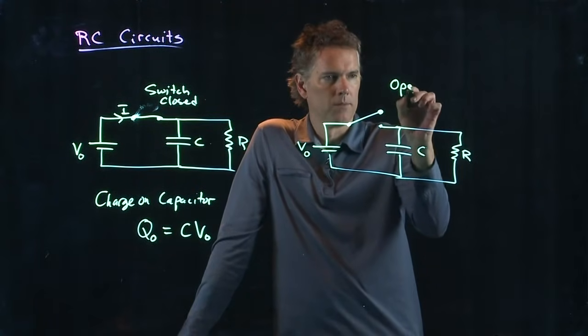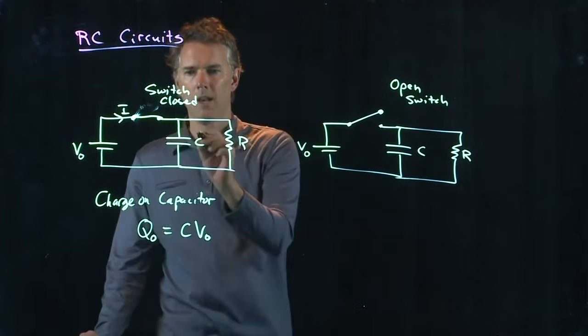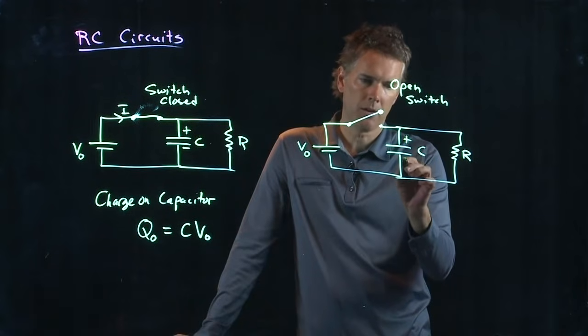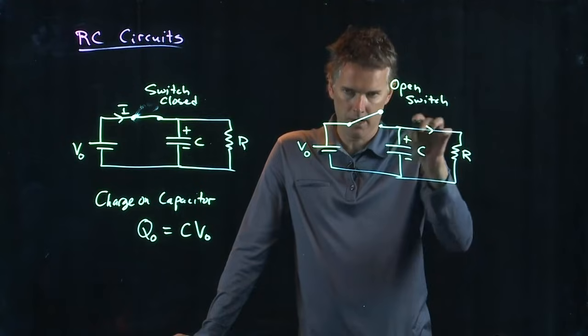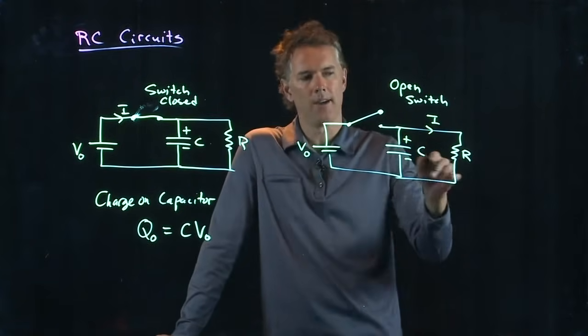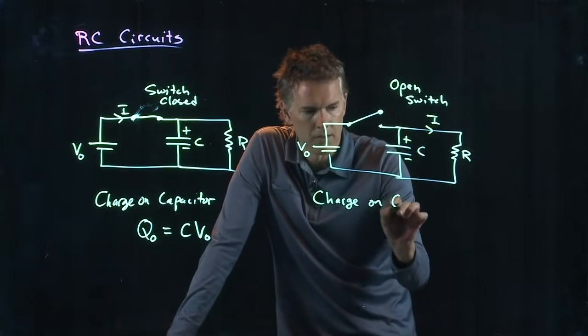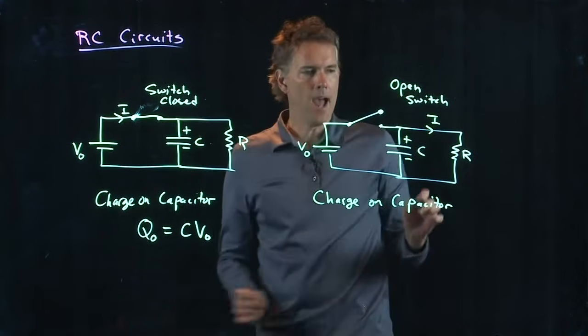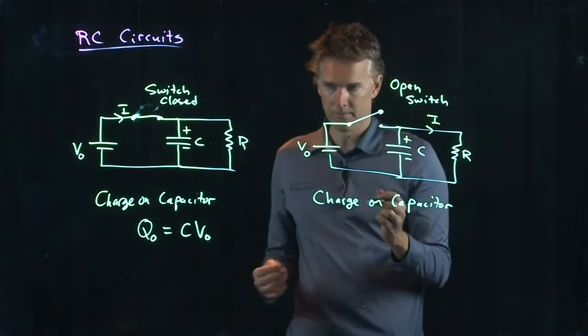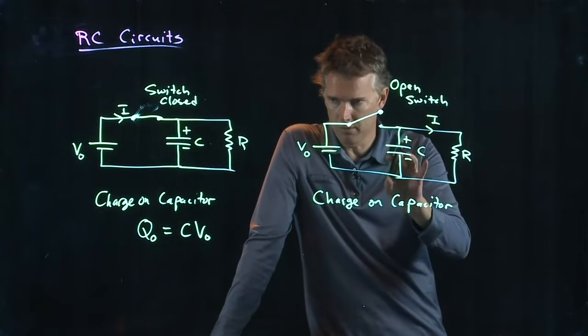So, when we open the switch, the current in this part of the circuit, of course, stops flowing. But there is a whole bunch of positive charge on that side of the capacitor and a whole bunch of negative charge on the other side of the capacitor. And so, now the capacitor, in fact, looks like a battery and can drive current I through this part of the circuit. It's attached to a resistor and so it can drive current around like that. And now let's think about what happens to this charge on the capacitor. As you start to power this current around this loop, the charge on the capacitor decreases.